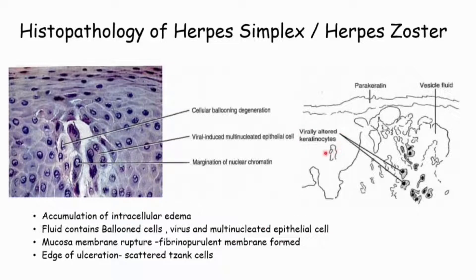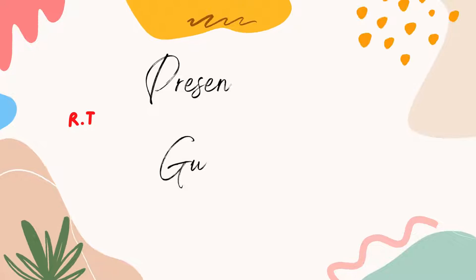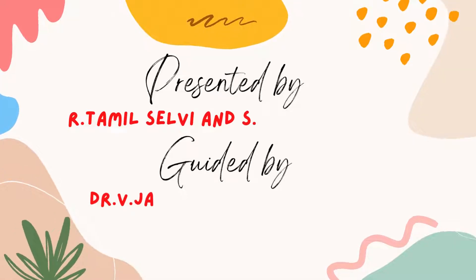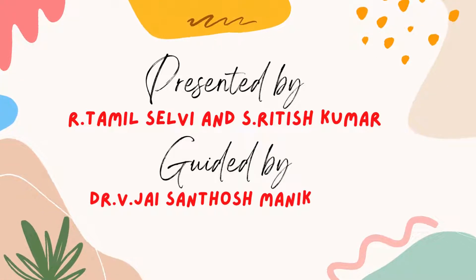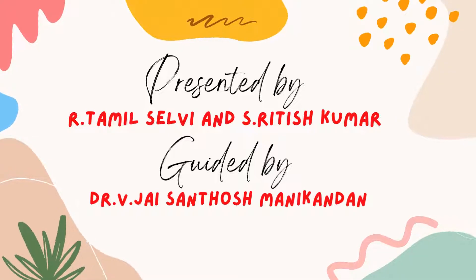The virally altered keratinocytes are formed, arranged in an adjacent cell manner. The mucous membrane ruptures to form a fibrinopurulent membrane, also called the fibrin membrane, and at the edge of ulceration, scattered Tzanck cells or multinucleated epithelial cells are formed.